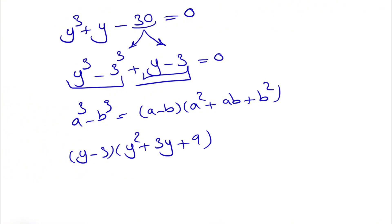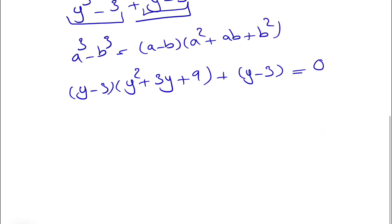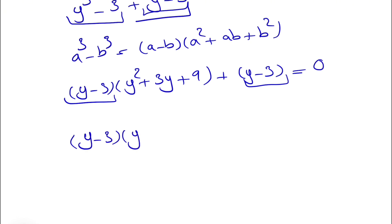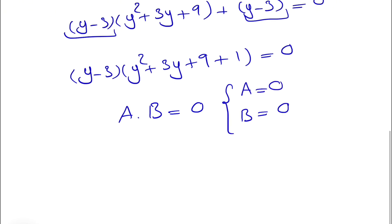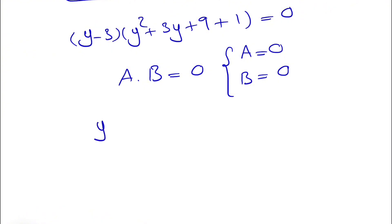We get y minus 3 times y squared plus 3y plus 9, and the rest of the expression is plus y minus 3 equals 0. We can see the common factor y minus 3, so we factor it out to get y minus 3 times y squared plus 3y plus 9 plus 1 equals 0. Since a times b equals 0, either a or b can be zero.